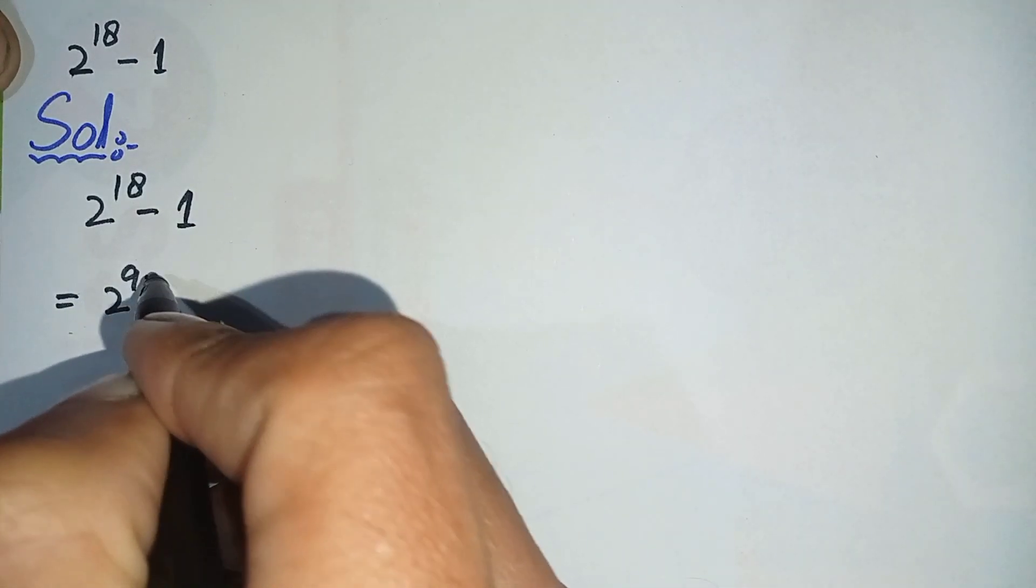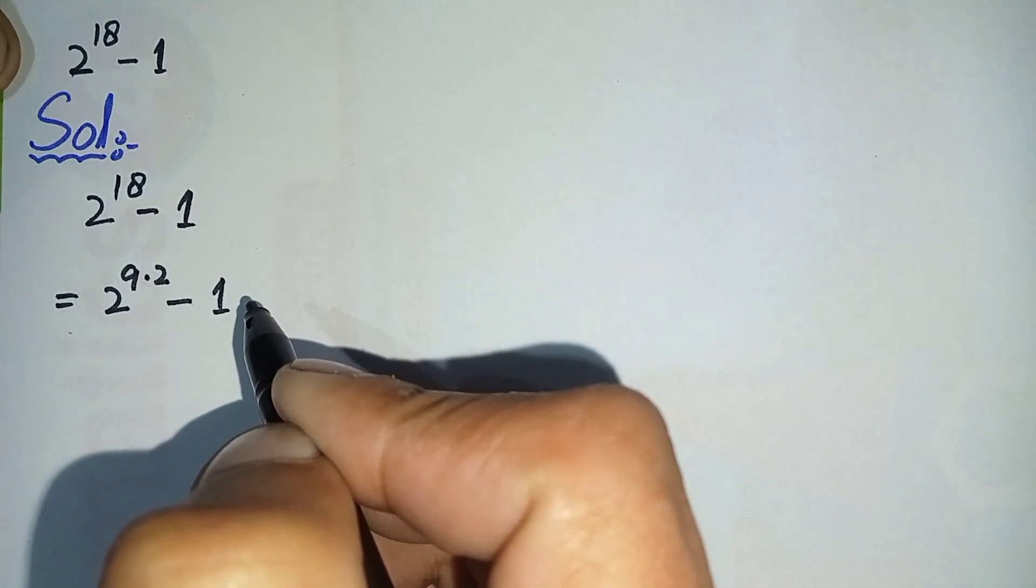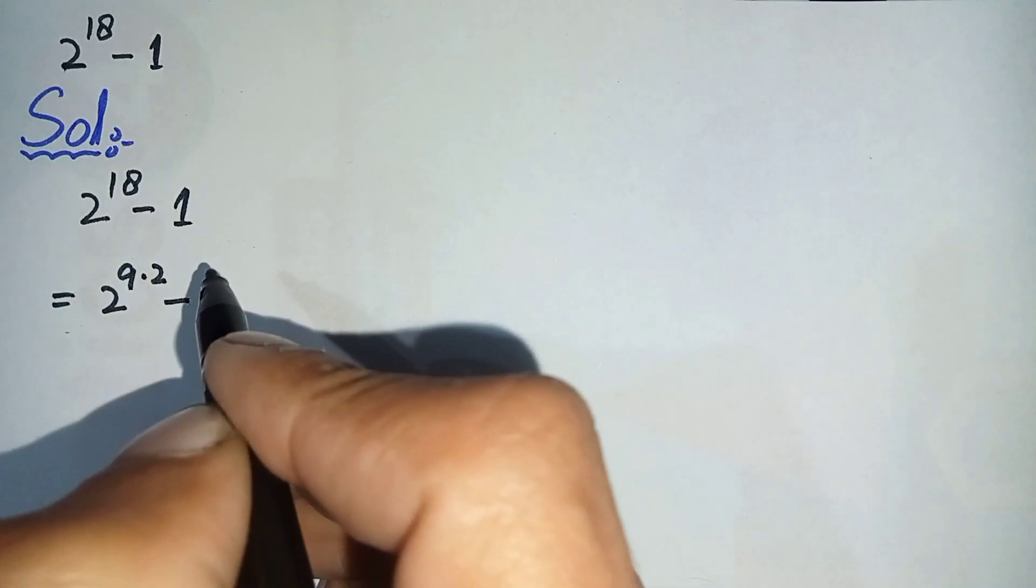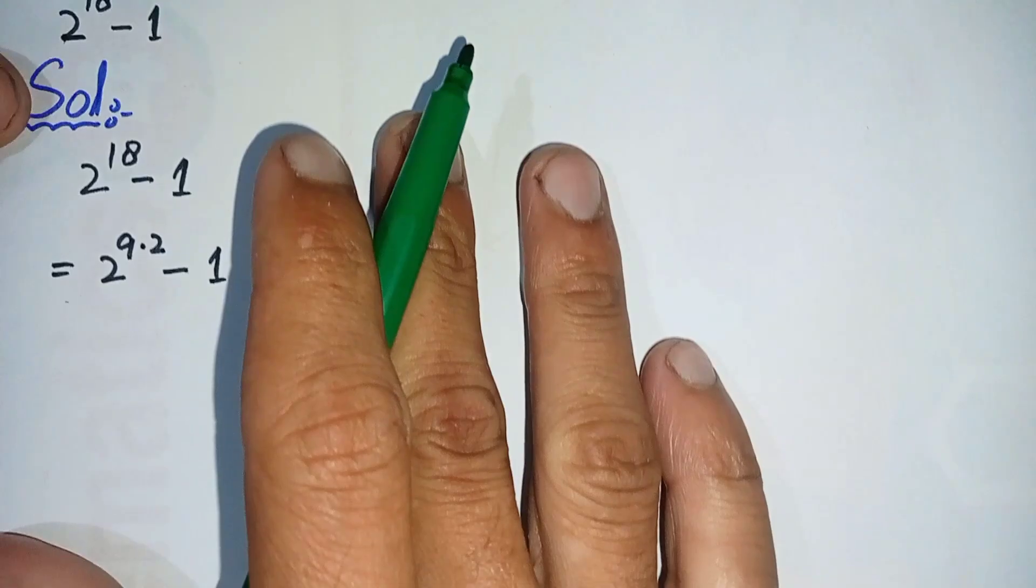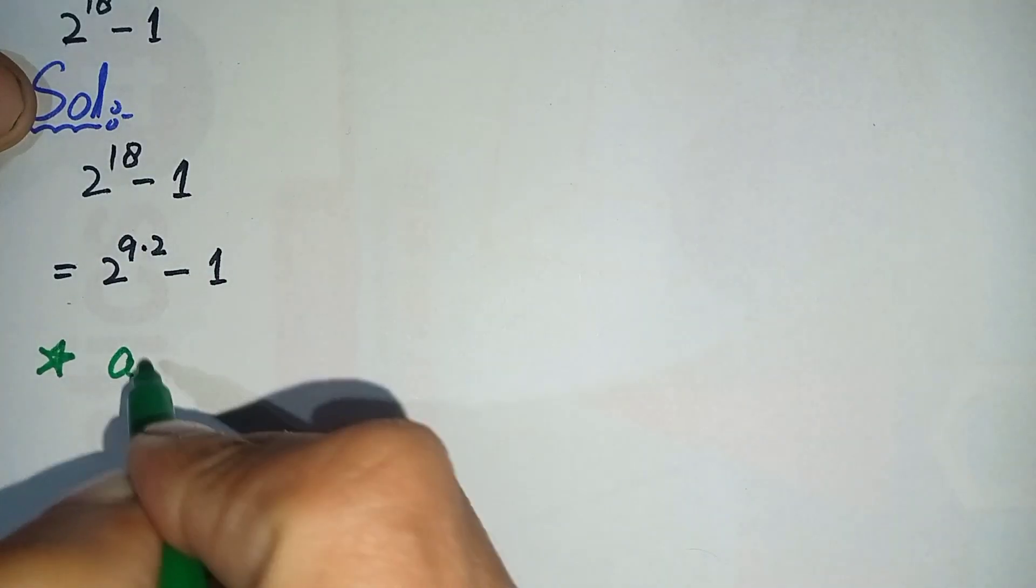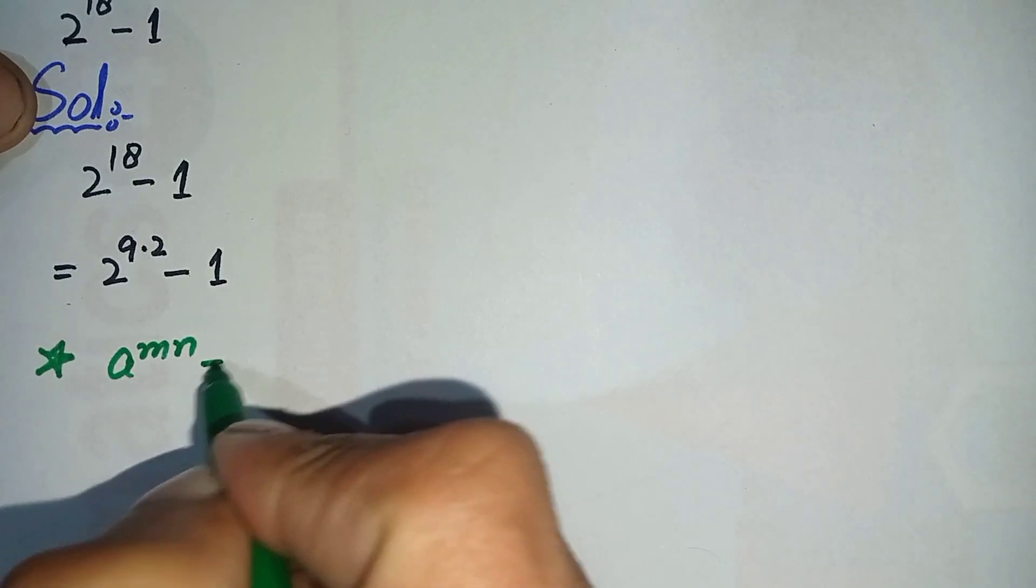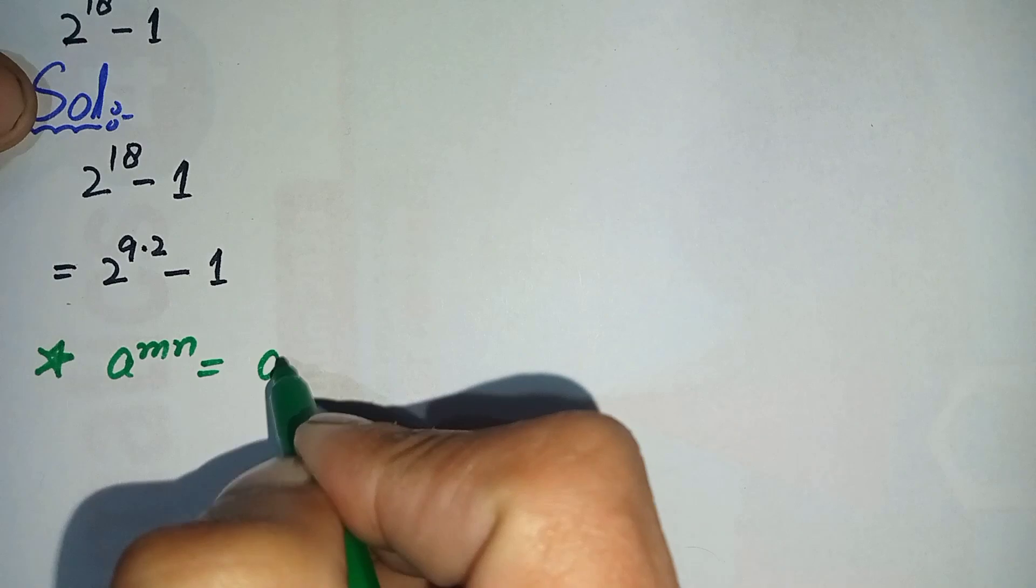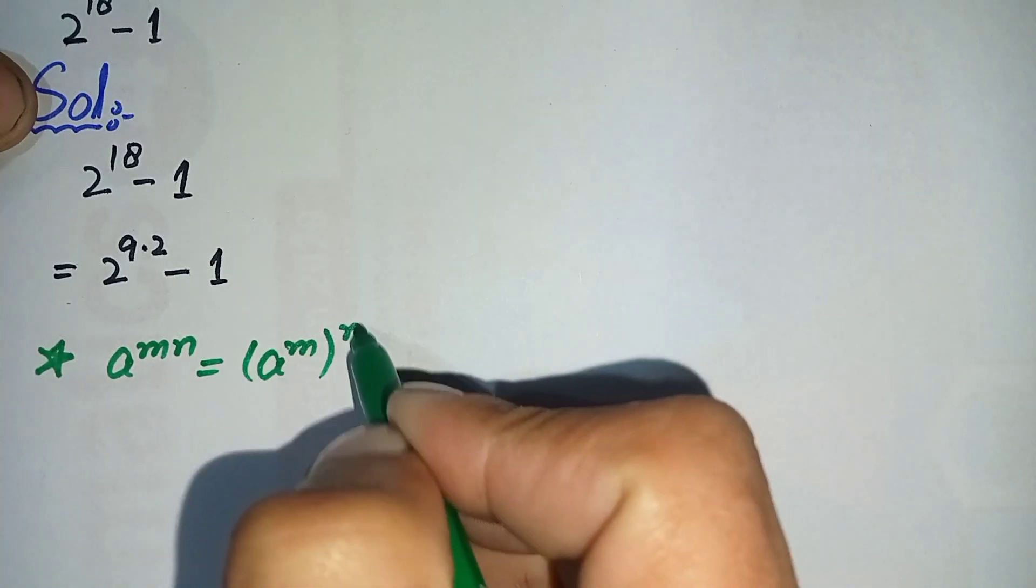Now in the next step we will use an exponential math property in this term. So that property is a raised to power m times n can also be written as a raised to power m raised to power n.